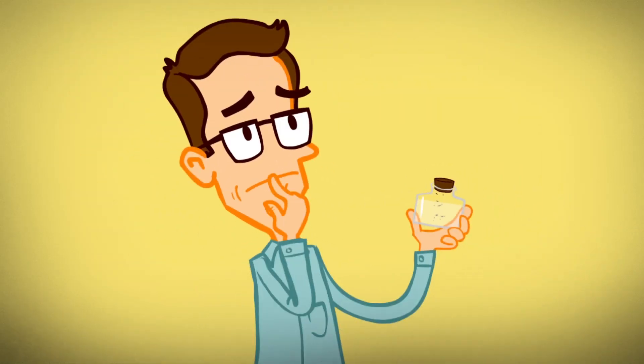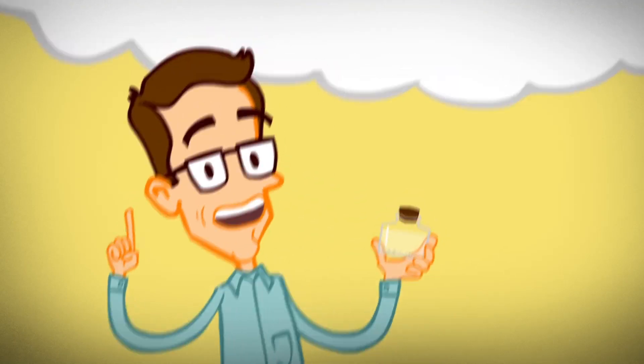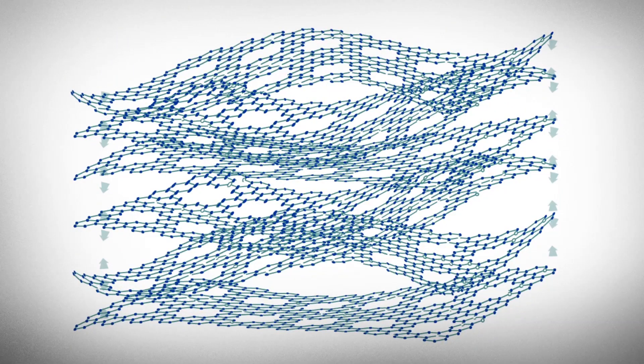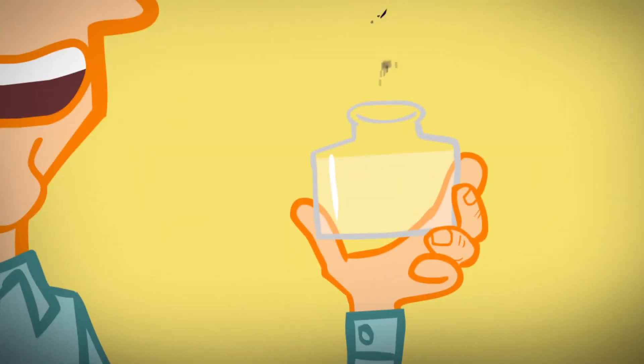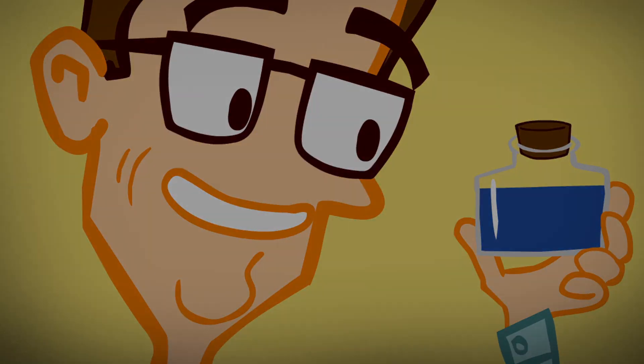In 2D Ink, we have developed a way to weaken the bonds between the 2D layers. So we crumpled 2D material layers. And just like crumpled paper sheets, they don't stick together as strongly, which makes them soluble in liquids. And voila! We can now produce electronic inks!